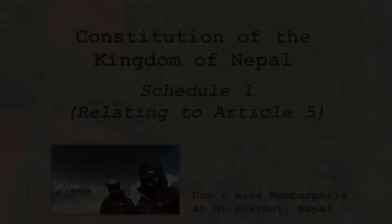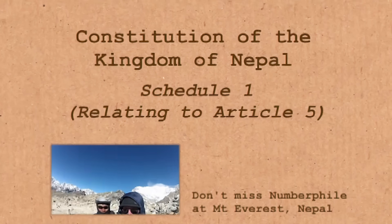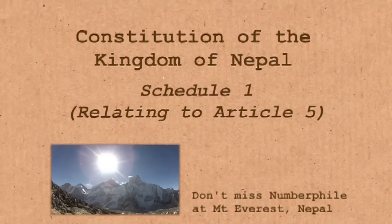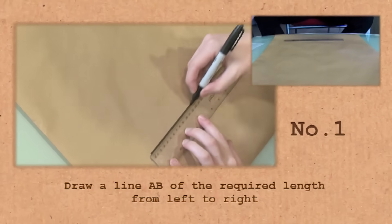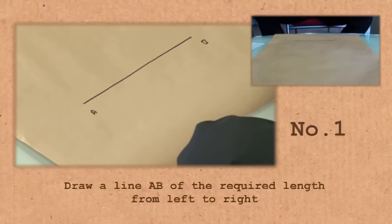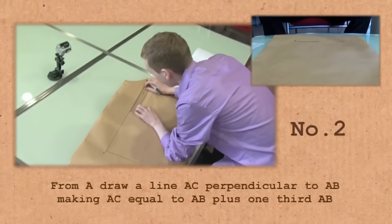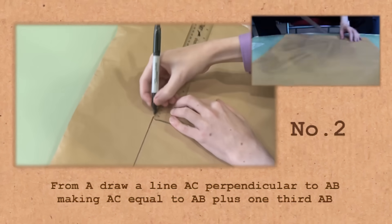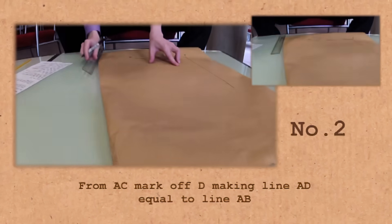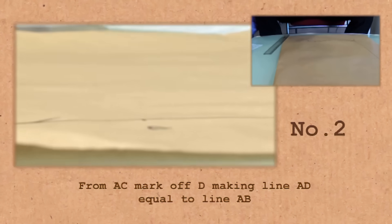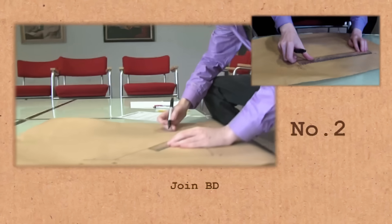And I've got it here. This is Article 5 of the Nepal Constitution, where it describes how to construct the nation's flag. Shall I read it to you? Schedule 1, relating to Article 5. National flag. A. Method of making the shape inside the border. 1. On the lower portion of a crimson cloth, draw a line AB of the required length from left to right. 2. From A, draw a line AC perpendicular to AB, making AC equal to AB plus 1 third AB. From AC, mark off D, making a line AD equal to line AB. Join BD.